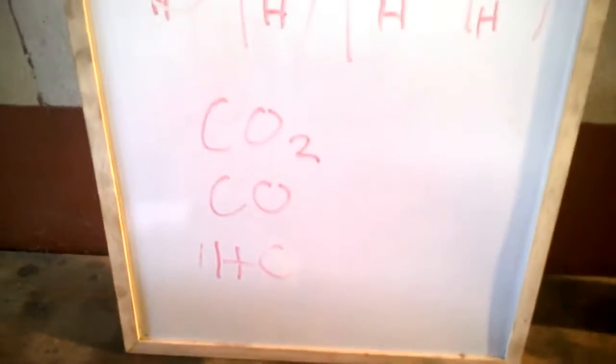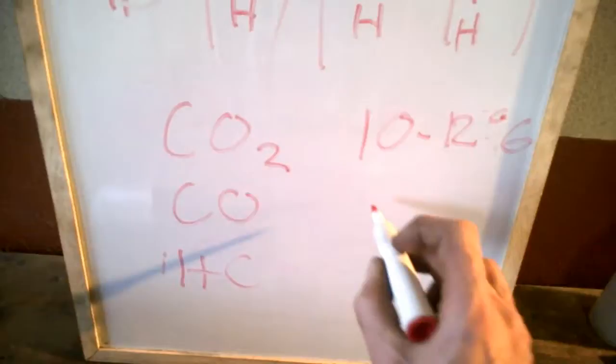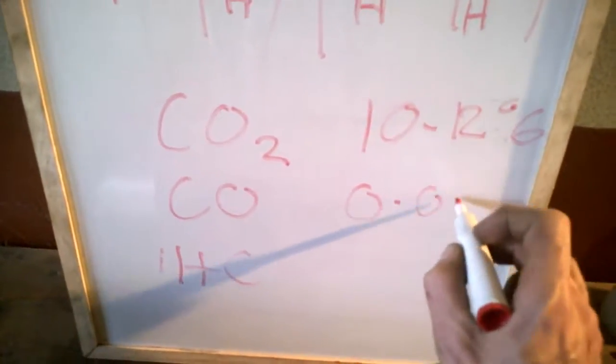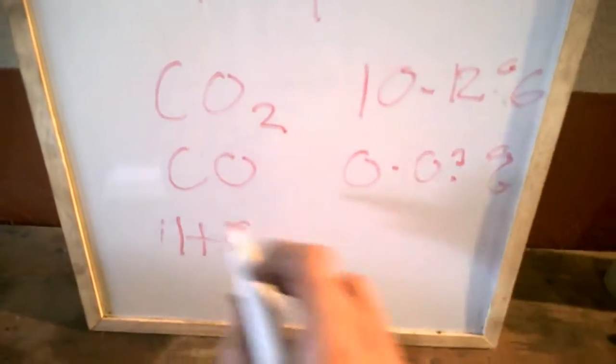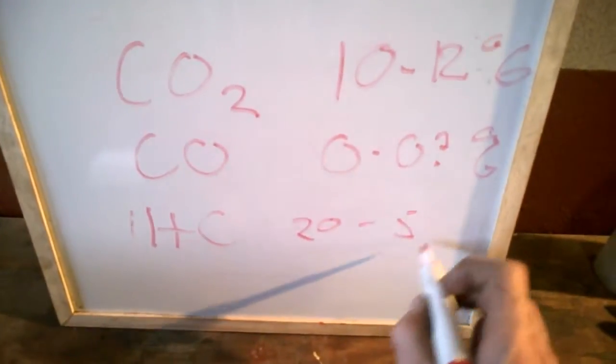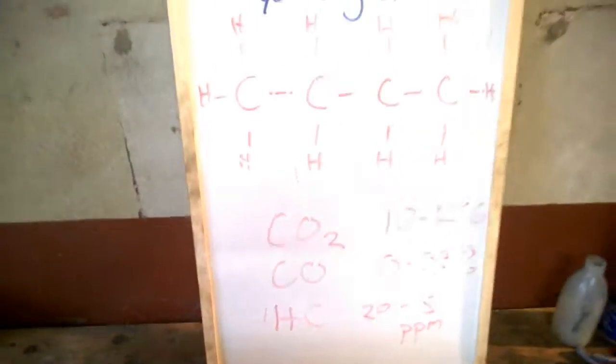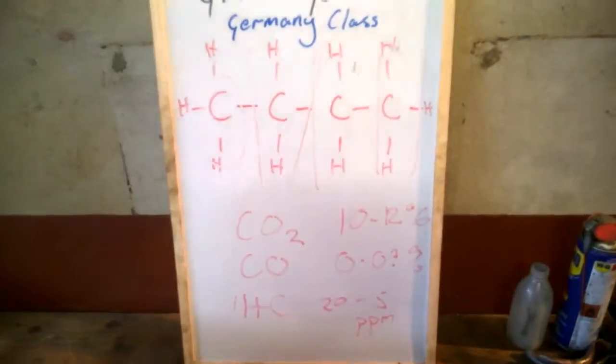So last night we ran this one, and we got 10 to 12 percent CO2, 0.0 something percent carbon monoxide, and anywhere between 20 and down to about five parts per million unreacted, unburnt, hydrocarbon chain. That's a vaporizing carburetor.